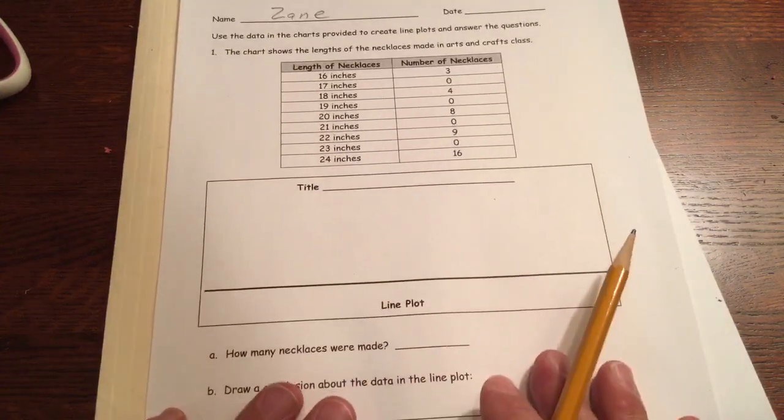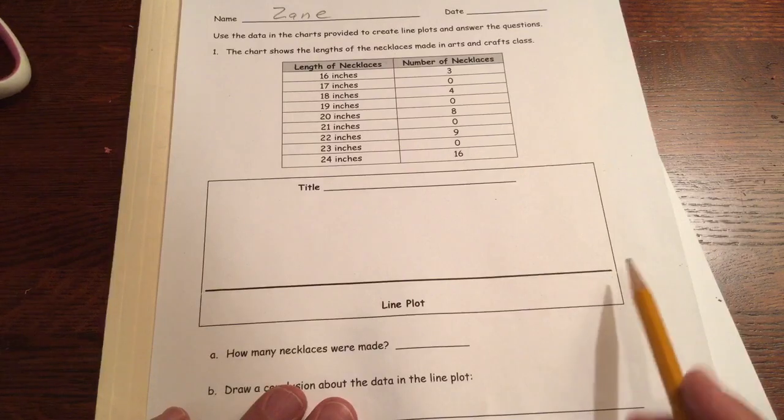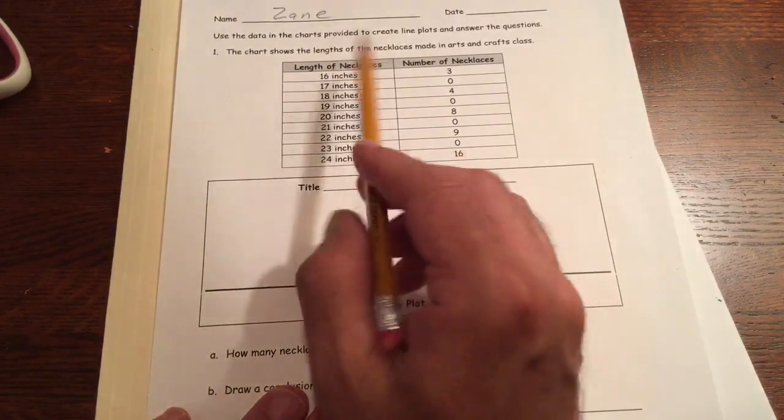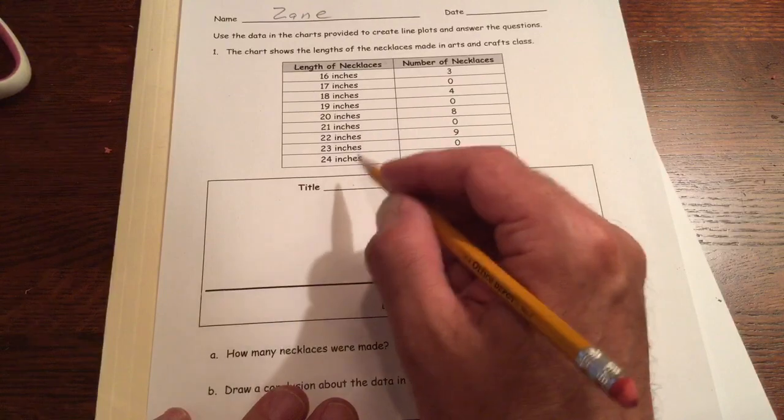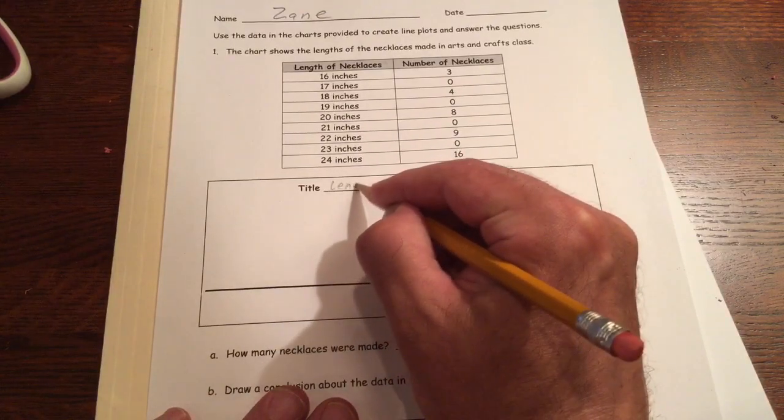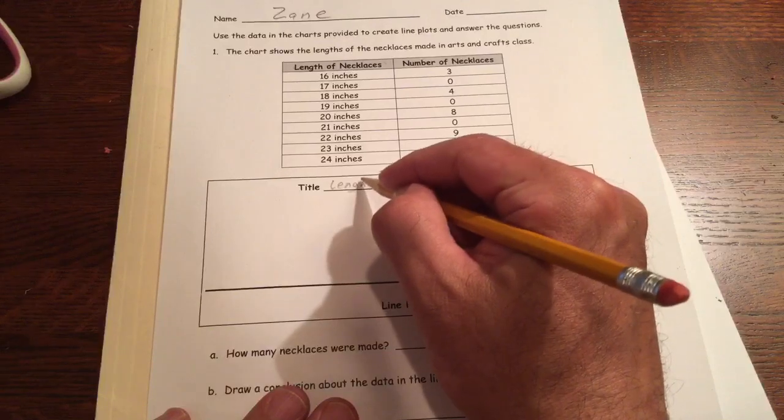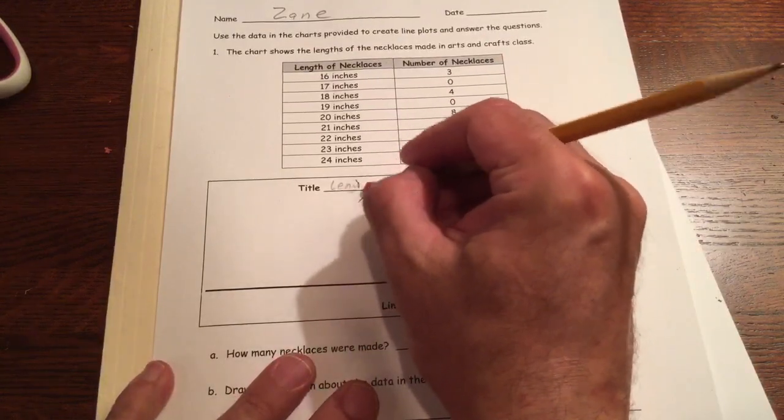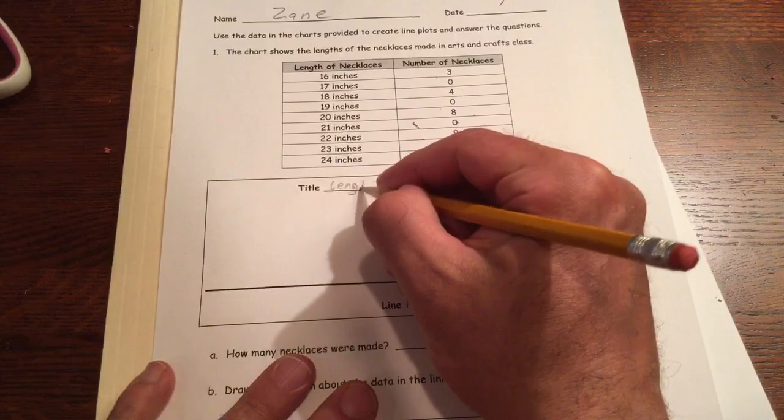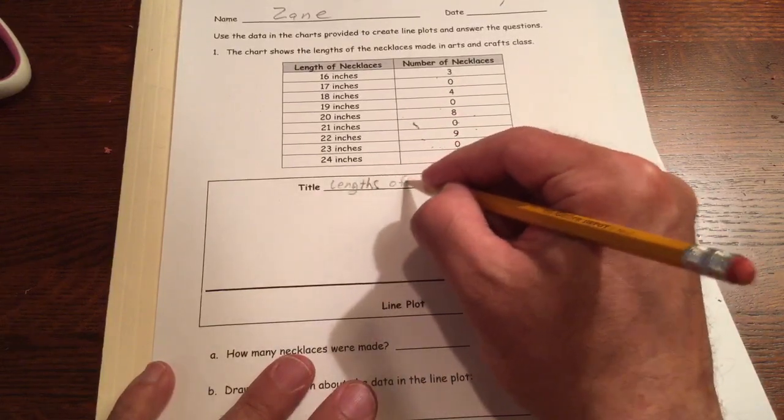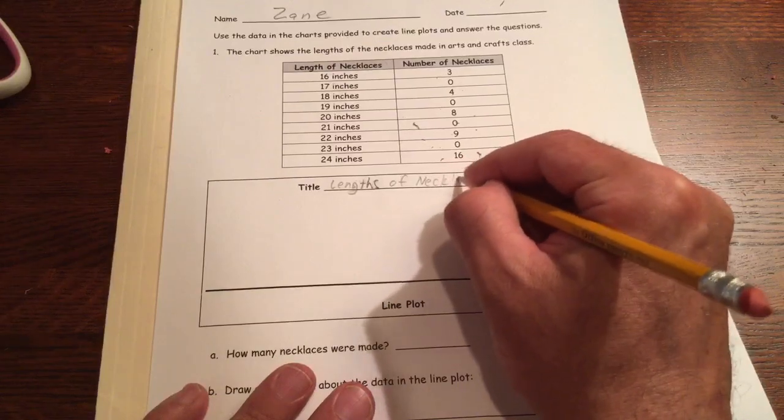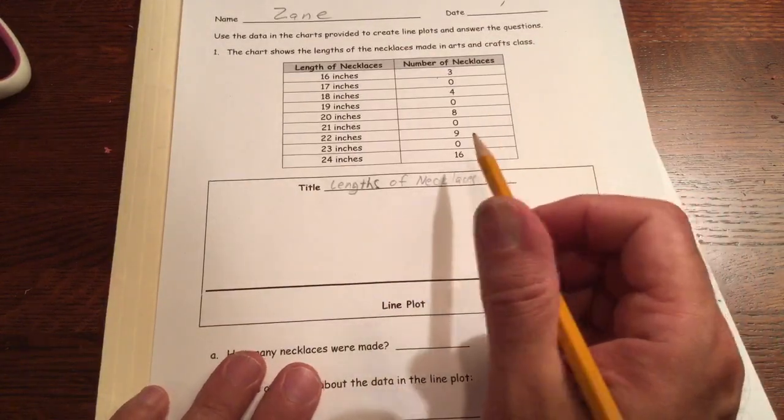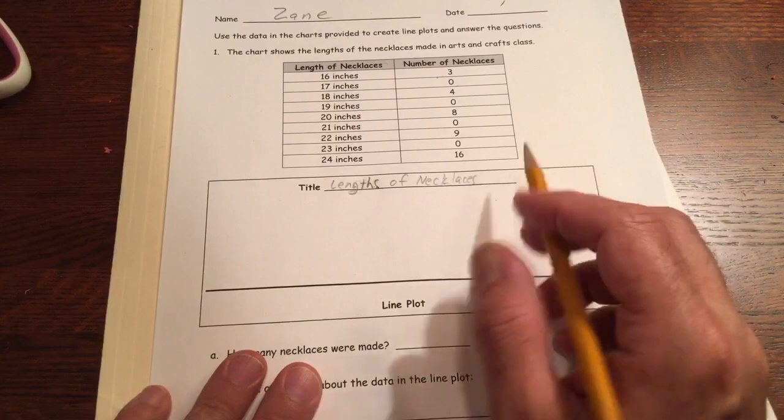So you've got a line plot to draw. Here's our line already drawn for us. The title can be Lengths of necklaces. We could make a longer title if we wanted to, but that's probably long enough.